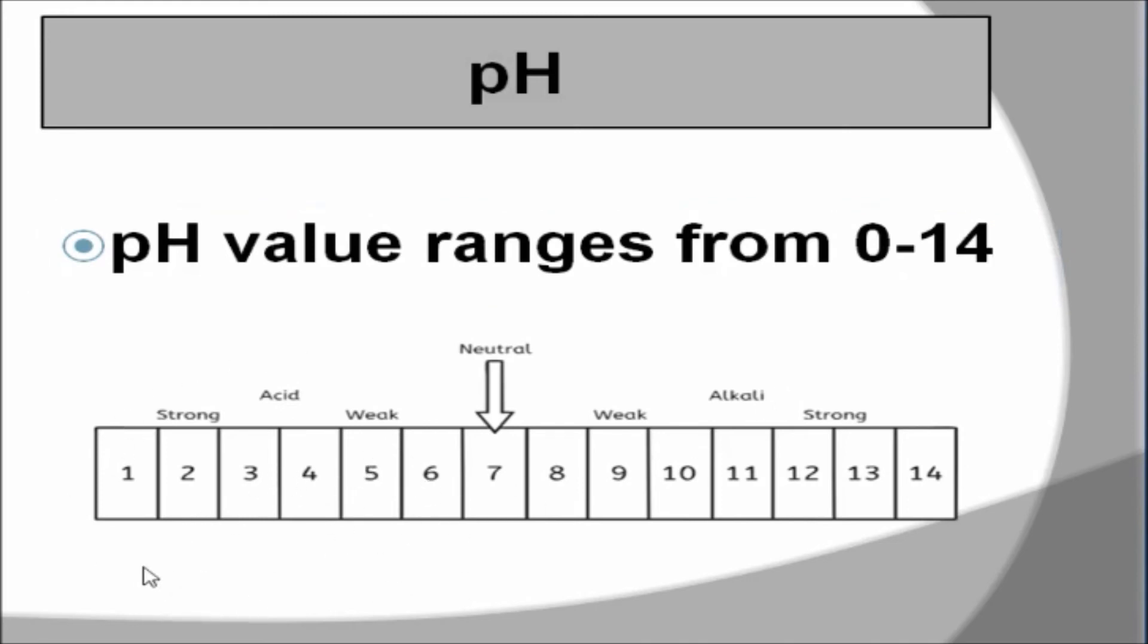If the solution has pH value from 0 to 6, then that is called as acid. If a solution has value of 7, then that is called as neutral solution. If a substance or a solution has pH value of 8 to 14, then they are called as bases. Here it is mentioned as alkali because if you dissolve base in the water, then that solution is called as alkali. If not, bases or alkali both are same.